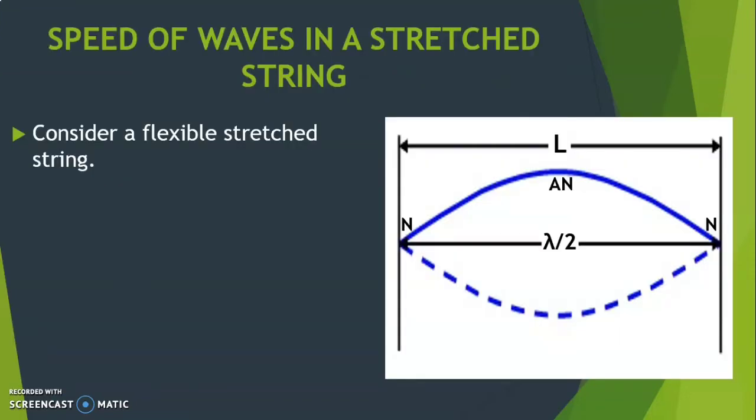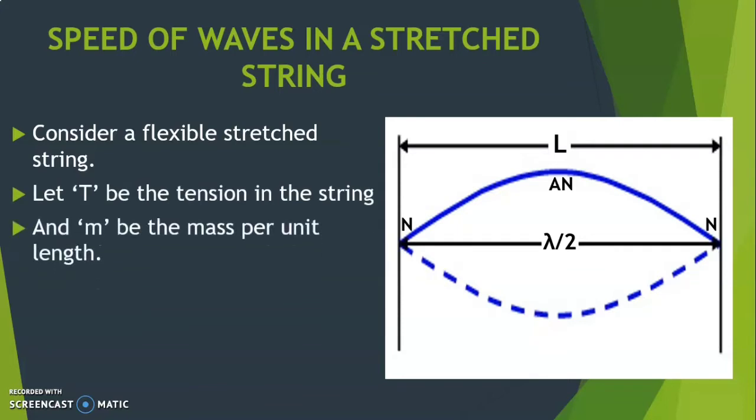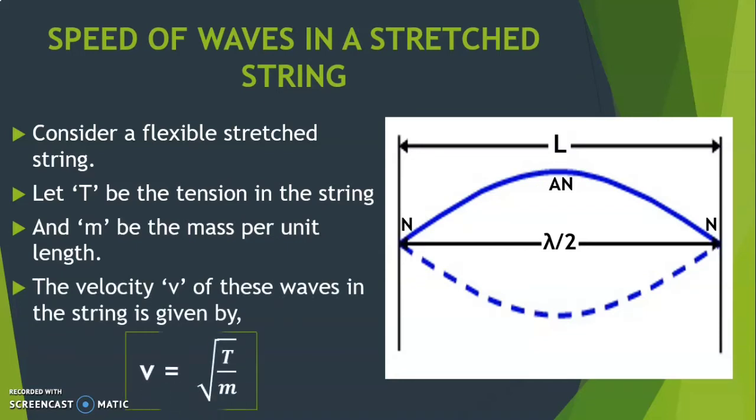First, let us find the speed of waves in a stretched string. Consider a flexible stretched string between two rigid supports. Let T be the tension in the string and m be the mass per unit length. If the string is plucked, transverse waves are set up that travel towards fixed ends. The velocity v of these waves in a string is given by v equals root over T by m.